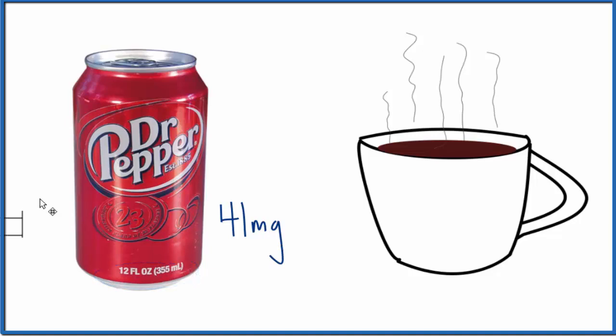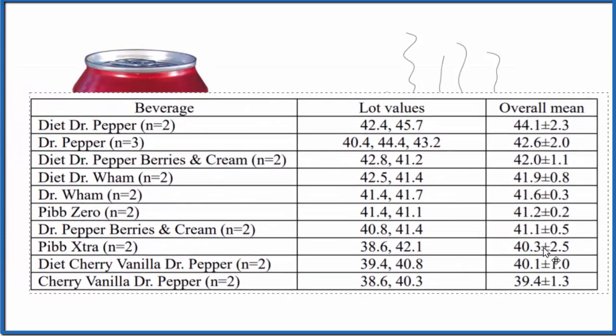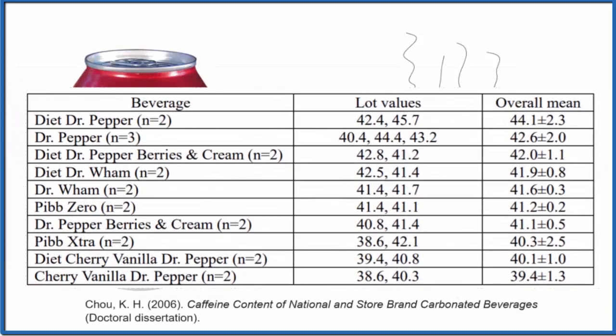And we can verify this with published research from Auburn University here. A researcher at Auburn tested a number of sodas to figure out how much caffeine was present. Here's Dr. Pepper right here, 42 plus or minus two milligrams of caffeine for that 12 ounce container. So pretty close to that 41 milligrams number we found before.